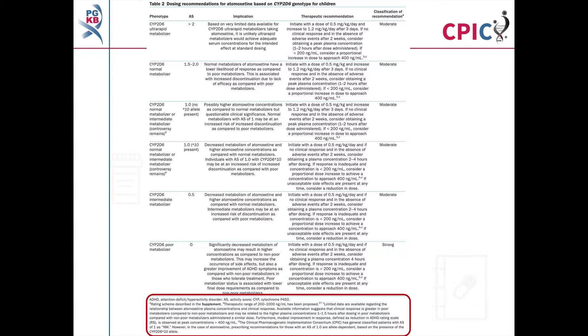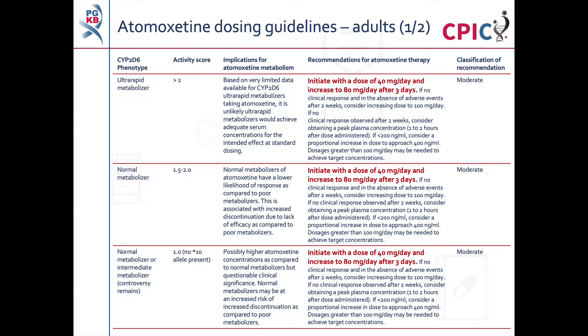The dosing recommendations for atomoxetine in children can be found in Table 2 of the guideline. Detailed footnotes pertaining to the recommendations can be found at the bottom of this table. These are the CPIC dosing recommendations for atomoxetine in adults.